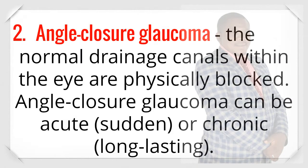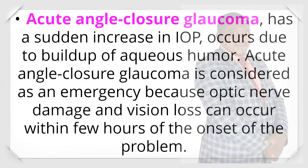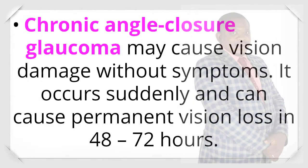Second, angle-closure glaucoma: the normal drainage canals within the eye are physically blocked. Angle-closure glaucoma can be acute (sudden) or chronic (long-lasting). Acute angle-closure glaucoma has a sudden increase in IOP occurring due to buildup of aqueous humor. It is considered an emergency because optic nerve damage and vision loss can occur within a few hours of onset. Chronic angle-closure glaucoma may cause vision damage without symptoms and can cause permanent vision loss in 48–72 hours.